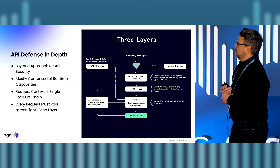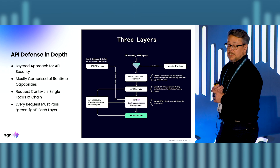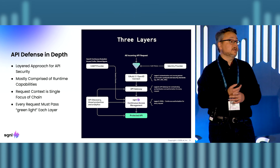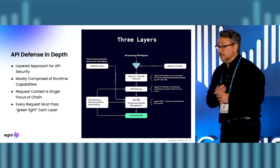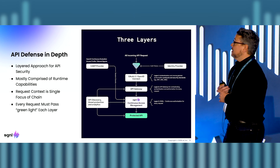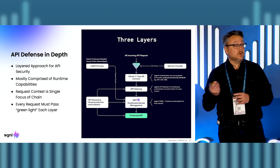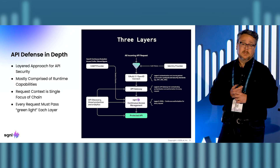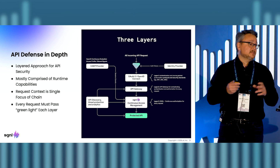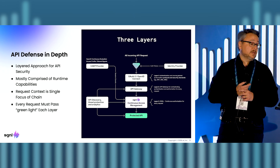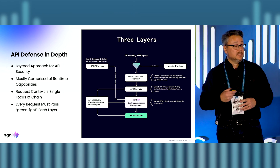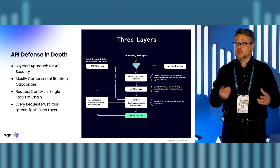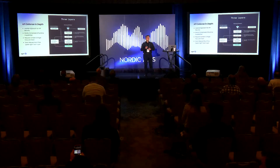Starting with the authentication layer or the identity provider layer, and the OAuth and OIDC protocols. There are some possible vulnerabilities with OAuth, but it's heavily used in the industry today. The other major layer in the API defense in depth approach is the API gateway, or a platform like Kong, that accepts requests for an API resource or endpoint and orchestrates that request to the actual API provider.